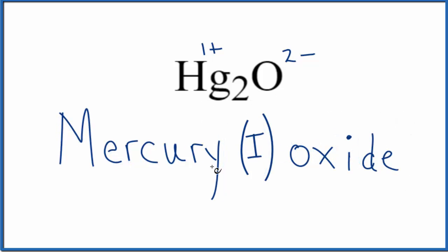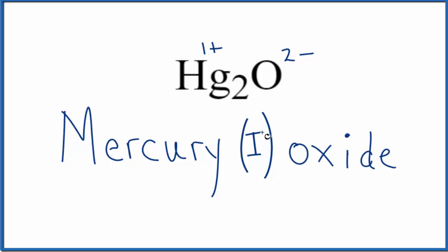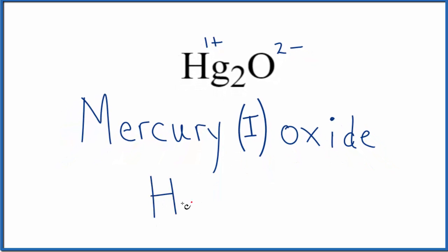We should note that mercury(I), when we talk about the mercury(I) ion, it's Hg, but it's Hg2 with a 2+ ionic charge. So this all stays together. When someone says mercury(I) ion, this is what we're talking about here.